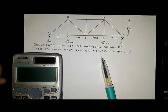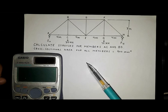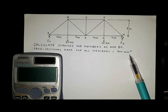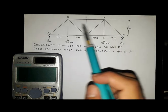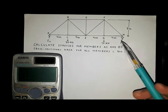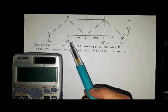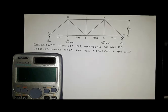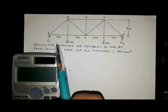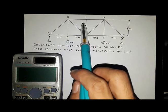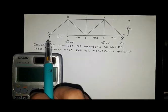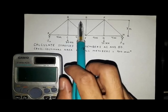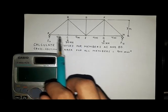Calculate stresses for members AC and BD. The cross-sectional area for all members is equal to 900 square millimeters. We have a given truss with a concentrated load of 30 kilonewtons at joint C and 70 kilonewtons at joint G. To calculate the stresses, we solve for the member forces at AC and BD using the method of joints or method of sections.